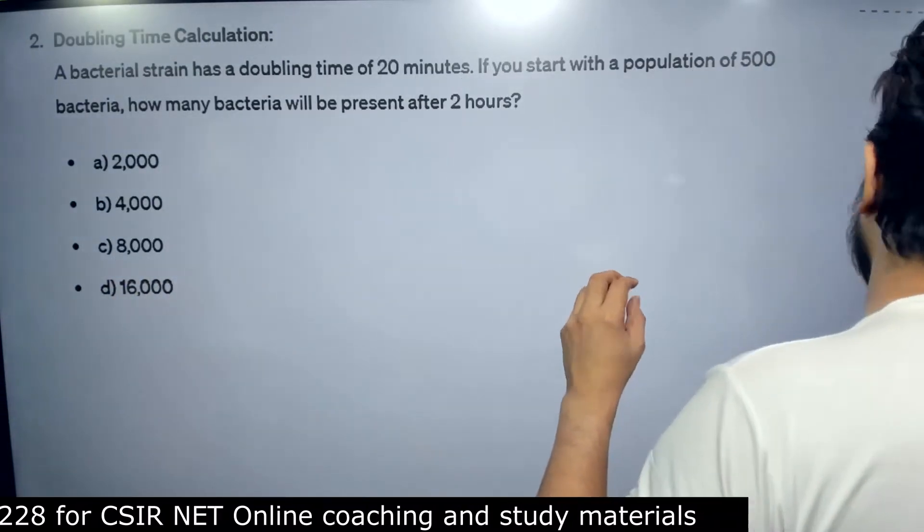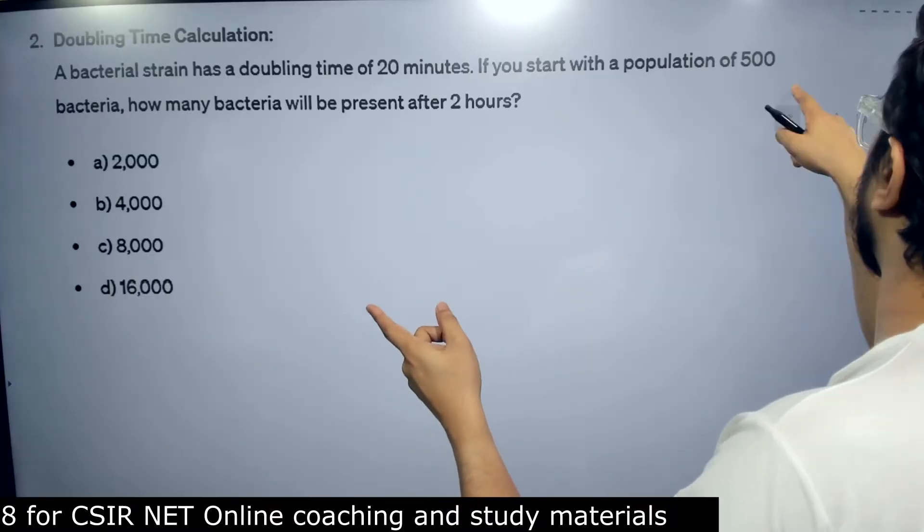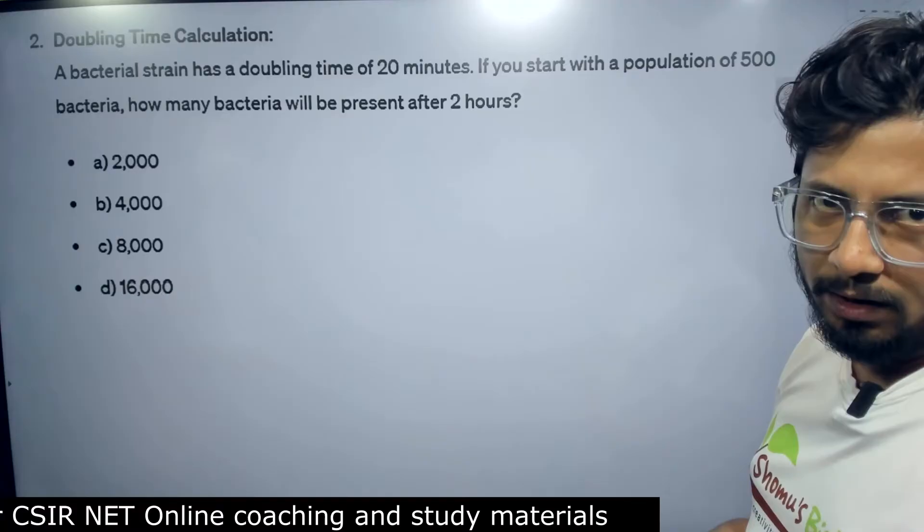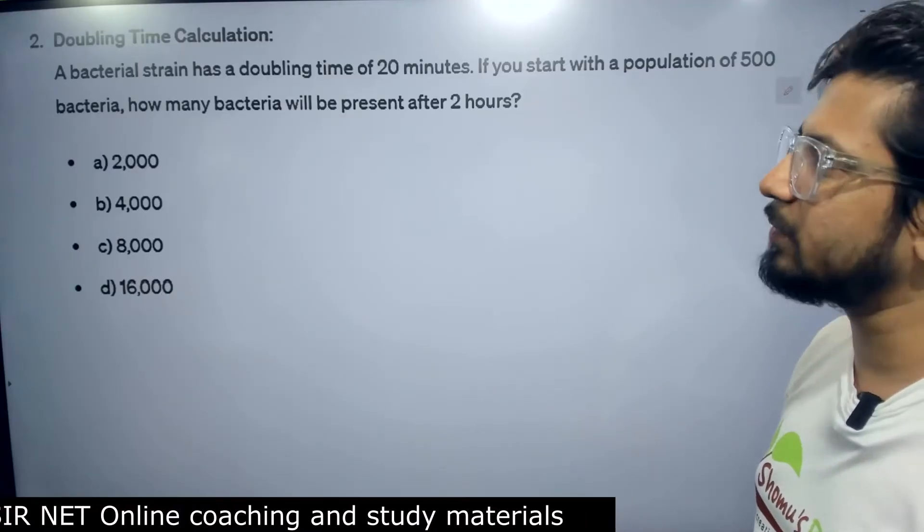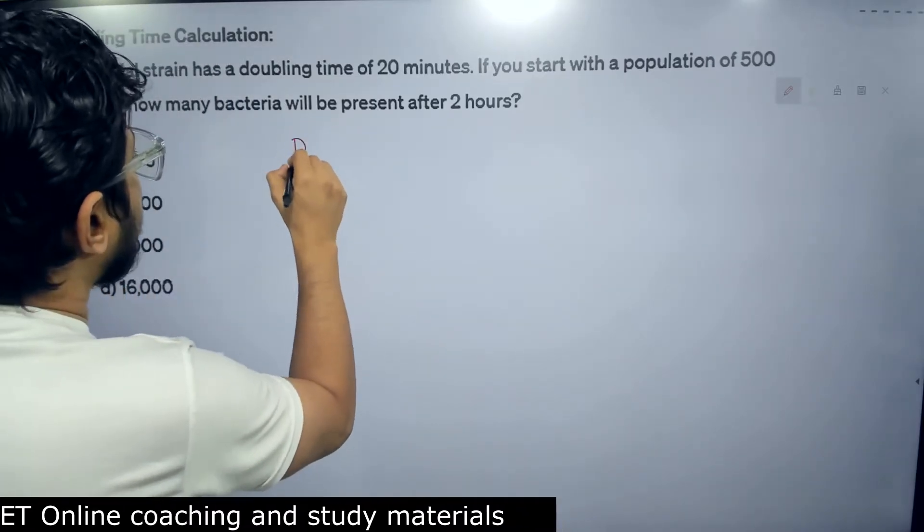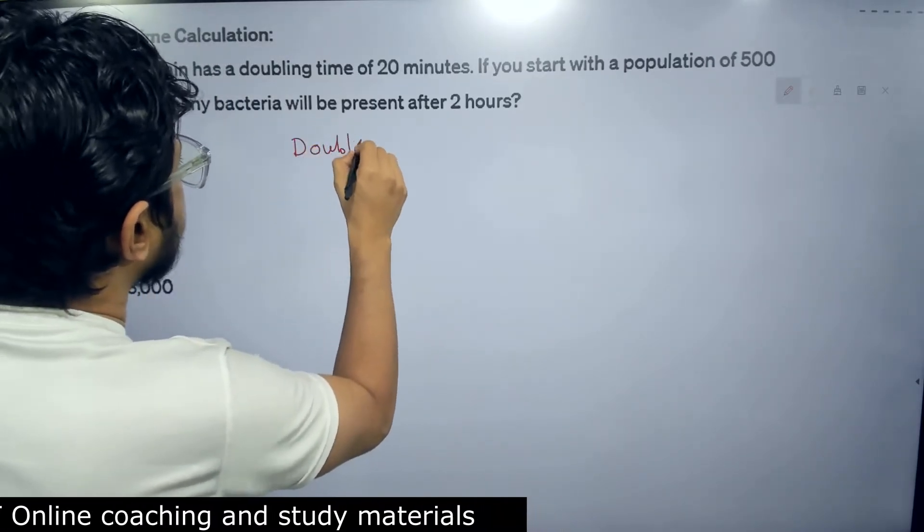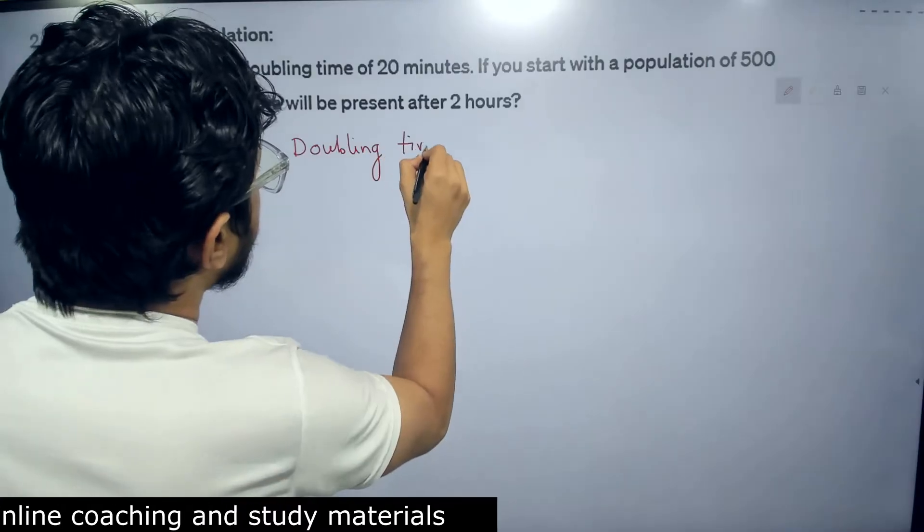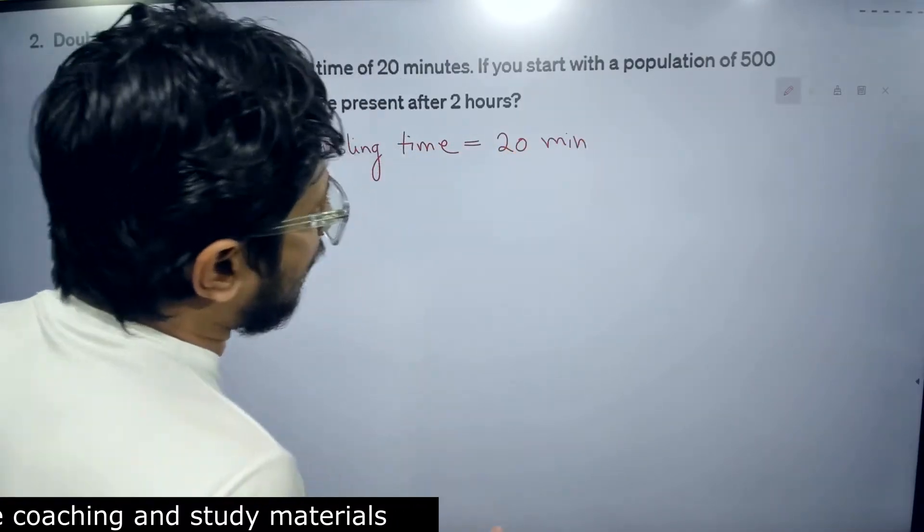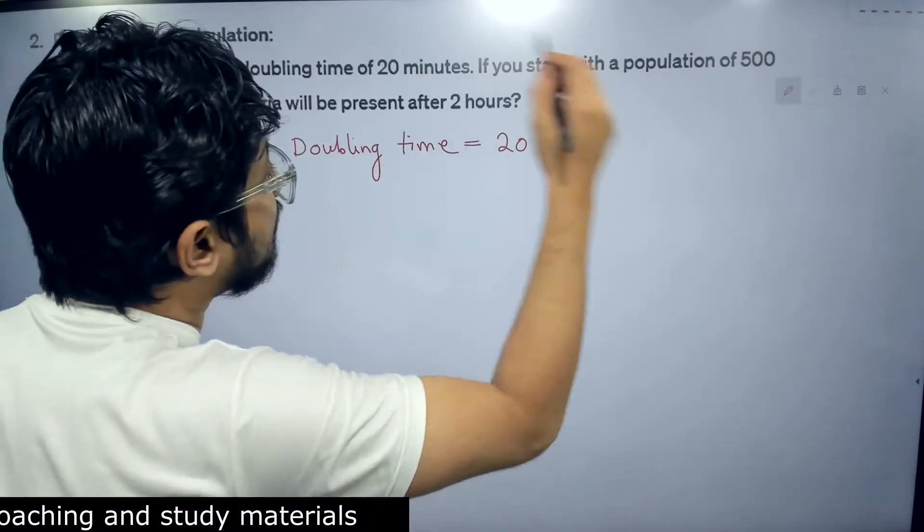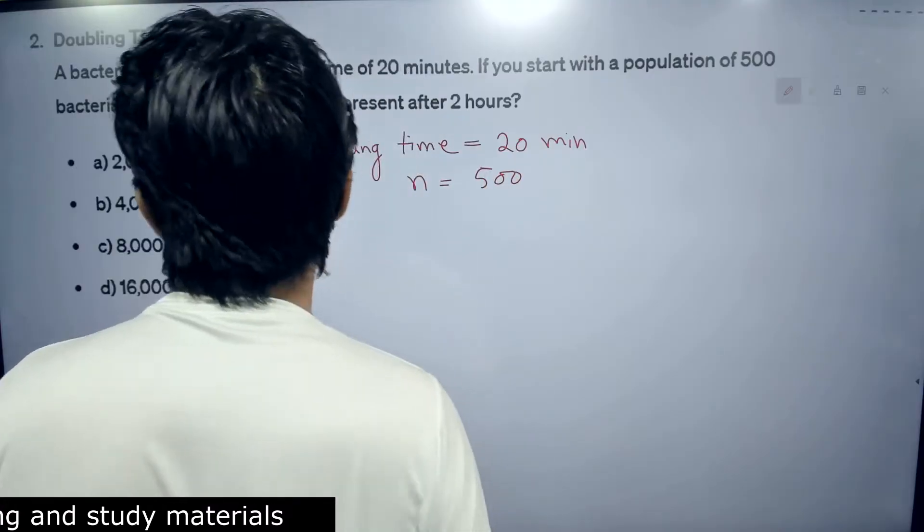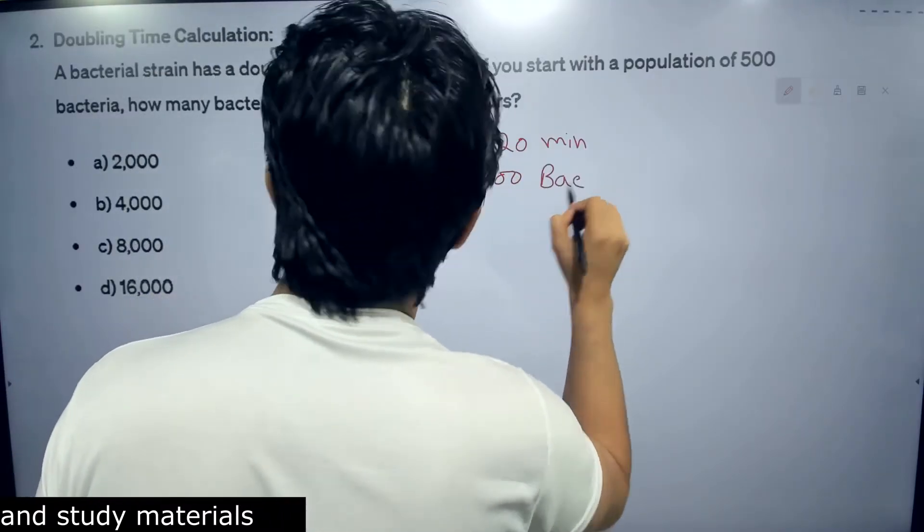If it starts from 1 then it will be like 2 in 20 minutes, 4 in next 40 minutes, 8 in 60 minutes like that. So this is the idea. The doubling time here is provided, doubling time is 20 minutes. The second part is the population start, the initial phase. We call it n number. The initial number is 500 bacteria.